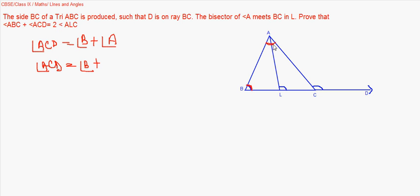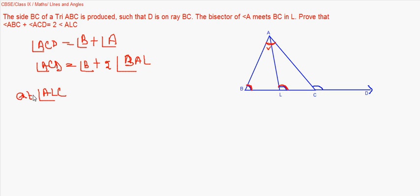Now angle ACD can be written as angle B plus angle A. Since angle A is bisected by AL, I can write angle A as twice of angle BAL. Now in triangle ABL, angle ALC is an exterior angle. So angle ALC, as exterior angle in triangle ABL, is equal to angle B plus angle BAL.